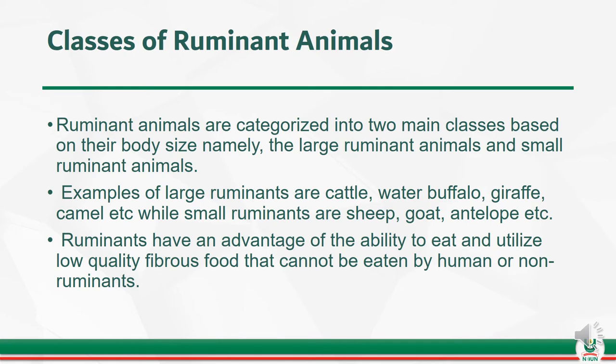Classes of ruminant animals: ruminant animals are categorized into two main classes based on their body size, namely large ruminant animals and small ruminant animals. Examples of large ruminants are cattle, water buffalo, giraffe, camel, etc., while small ruminants are sheep, goat, antelope, etc. Ruminants have the advantage of their ability to eat and utilize low-quality fibrous food that cannot be eaten by humans or non-ruminants.